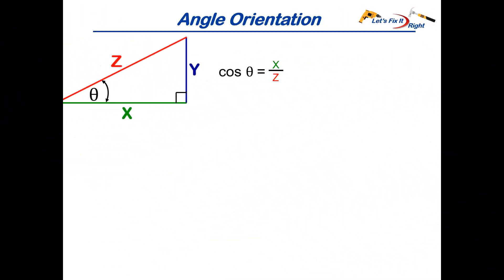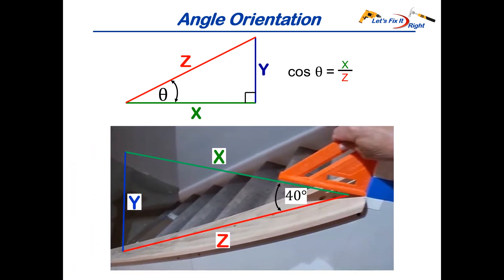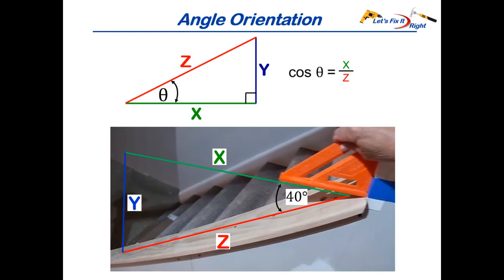In our sample problem we placed theta the angle of interest on the left side and the y side of the triangle pointed upward. To solve for our staircase distances I had to move the angle of interest to the right and inverted the triangle so the y side points downward. Nevertheless even though the triangle is upside down the sine cosine and tangent equations still apply. X is still the horizontal side and side z the hypotenuse coincides with the top of the knee wall.